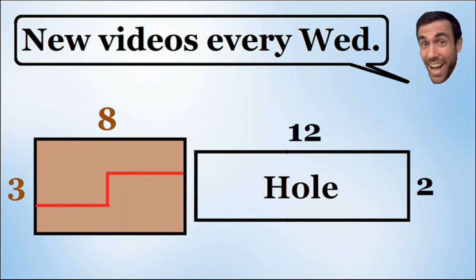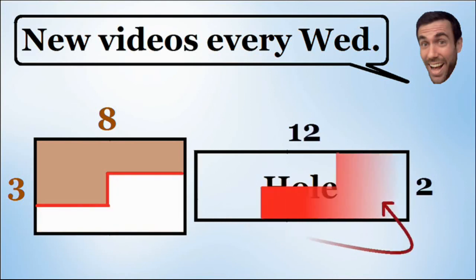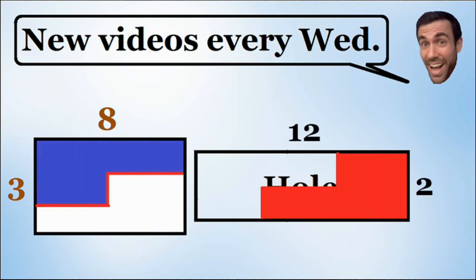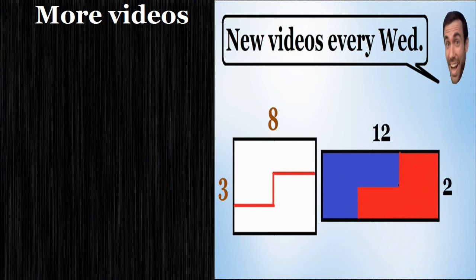Now I'm going to color the bottom piece in red and place it on the right side of the hole. I'm going to color the top piece in blue and place it on the left side of the hole. Notice how they fit perfectly into the 2x12 space. We have officially solved the brain teaser.